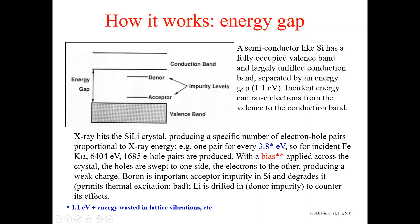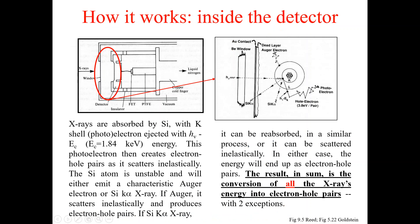Looking at the diagram, one note indicates that 1.1 electron volts of energy is wasted in lattice vibrations. There is also a bias applied, meaning a voltage is applied between two points — for example, positive 1500 volts on one side and negative 1500 volts on the other.